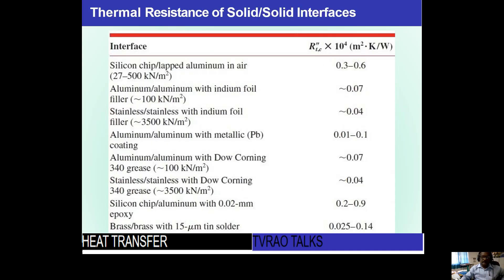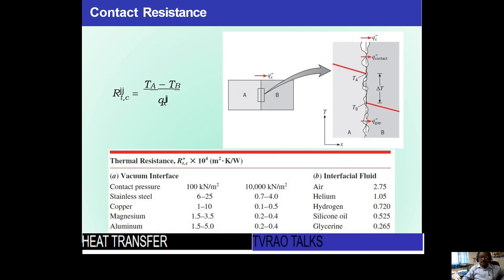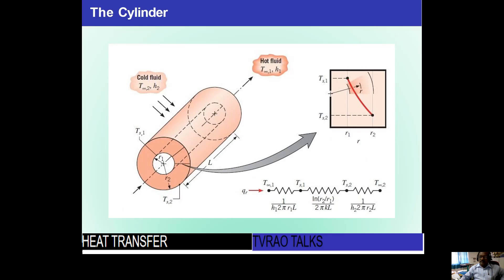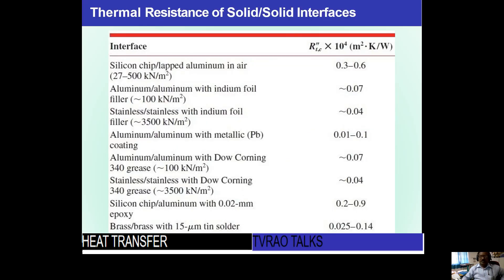There is also contact resistance — thermal resistance at various solid-solid interfaces. The values for this thermal contact resistance are available in the literature, that is, in heat transfer data books. Whenever these values are required in problems, they will generally be given. If not, we can find them from the tables for materials such as silicon, aluminum, brass, and other metals.